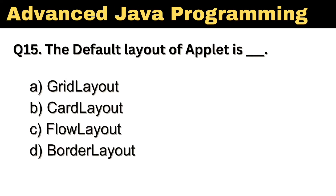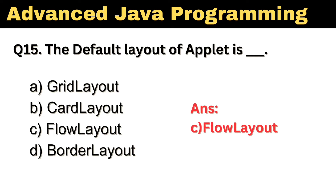Question number 15. What is the default layout of Applet? The right answer is option C: Flow Layout.